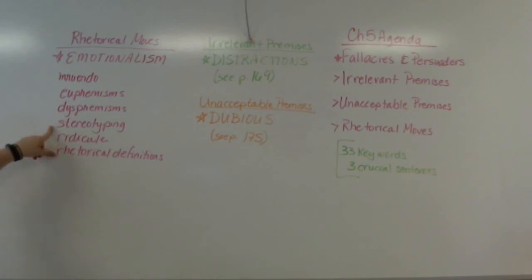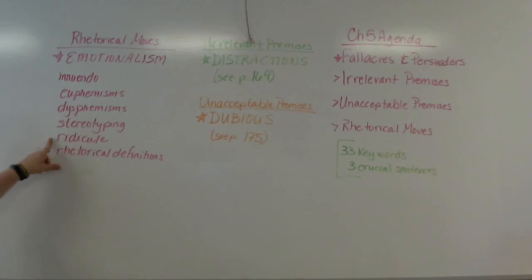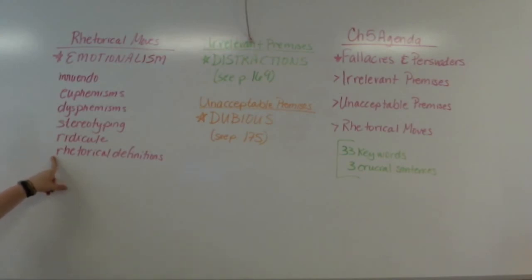We've talked about stereotyping back in Chapter 2. When we're talking about stereotyping, we're talking about making assumptions about a group of people based on some not-well-thought-out description. Ridicule, or making fun of somebody — not in a good way. And then we have rhetorical definitions that tend to sway us emotionally, when definitions should help us get a better understanding of the word, not cover it up.